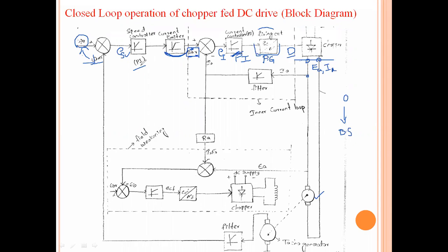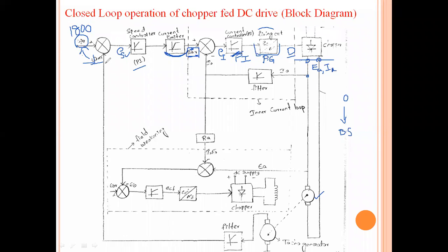This is how the outer speed loop as well as the inner current loop work. If after sometime we want to increase the speed to 1800 RPM — above the base speed of 1500 RPM — from zero to base speed, the armature circuit works, meaning the chopper circuit controls the drive. This is called armature voltage control because this chopper is connected to the armature terminal of the motor.